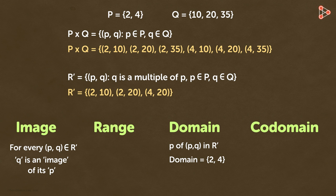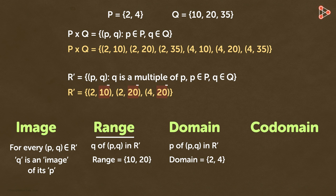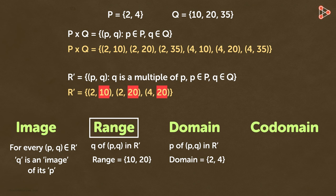Now it would be very easy to guess what range means. The set of q of all ordered pairs (p,q) in set R' is called the range. Or we can say that the second elements of all the ordered pairs in the relation R' is called the range. The range contains the elements 10 and 20. So all the first elements form the domain, and all the second elements form the range.